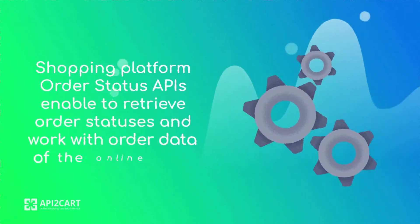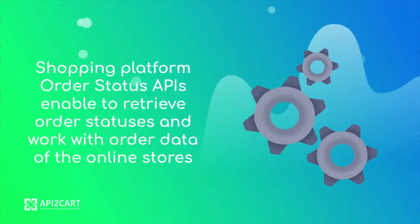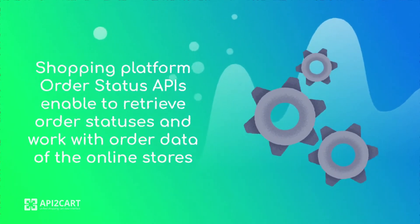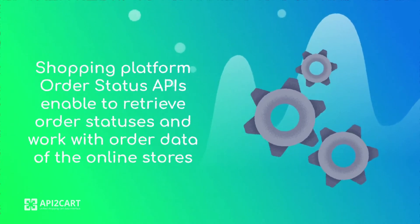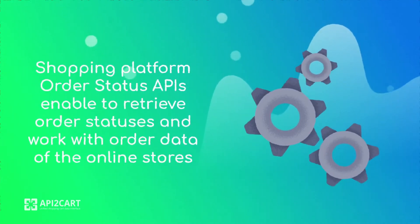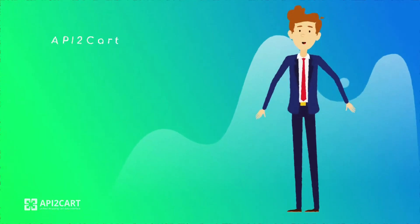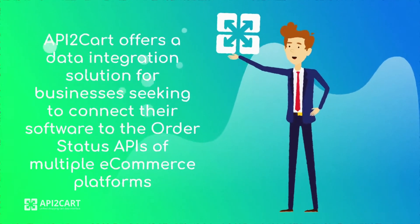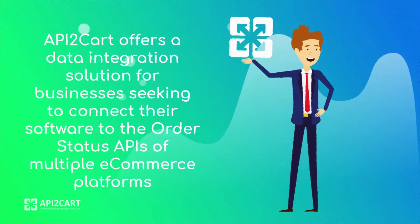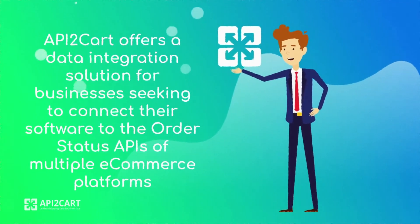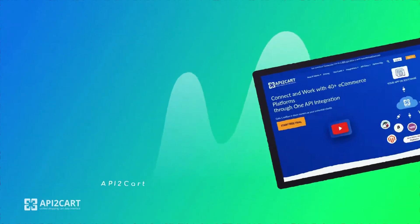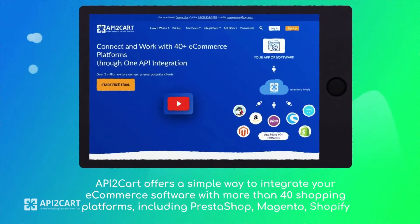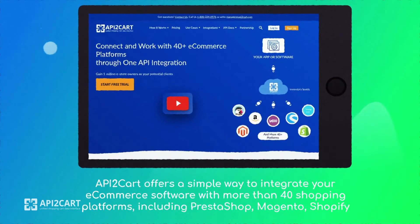Shopping platform order status APIs enable retrieving order statuses and working with order data of online stores. API2Cart offers a data integration solution for businesses seeking to connect their software to the order status APIs of multiple e-commerce platforms, providing a simple way to integrate with more than 40 shopping platforms, including PrestaShop, Magento, and Shopify.